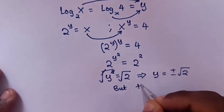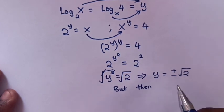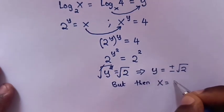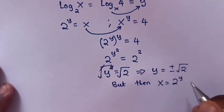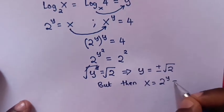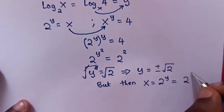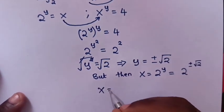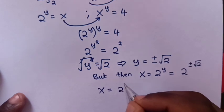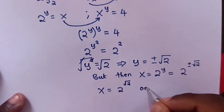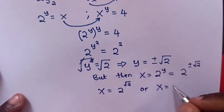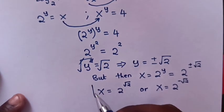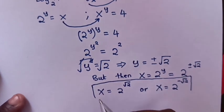Recalling that x equals 2 to the power y, and y equals plus or minus square root of 2, we substitute the value of y into the equation for x. Therefore, x equals 2 to the power of square root of 2, or x equals 2 to the power of negative square root of 2. These are the values of x.